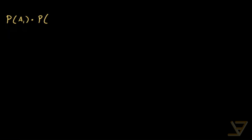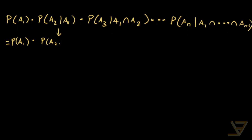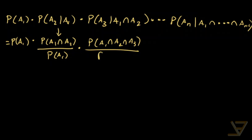P of A_1 times the probability of A_2 given A_1, times the probability of A_3 given A_1 intersect A_2, all the way through to the probability of A_n given A_1 intersect all the way through to A_{n-1}. Using the definition of conditional probability, this equals P of A_1 times P of A_1 intersect A_2 divided by P of A_1, times P of A_1 intersect A_2 intersect A_3 divided by P of A_1 intersect A_2, all the way through to P of A_1 intersect all the way through to A_n.